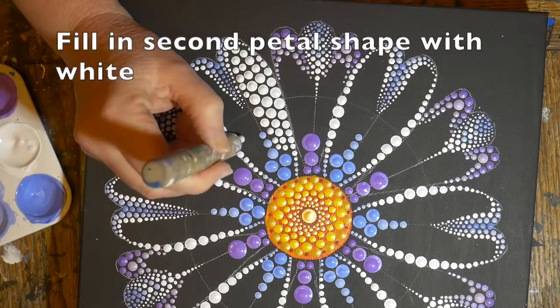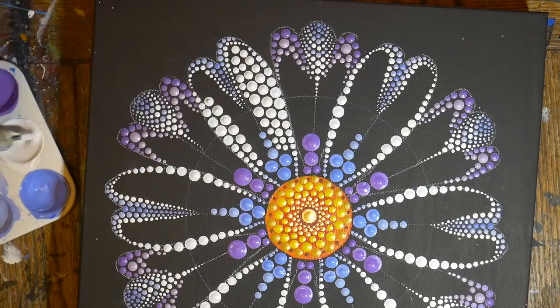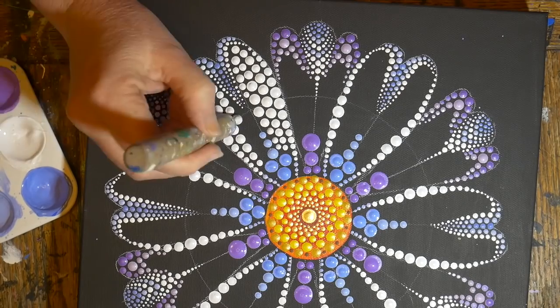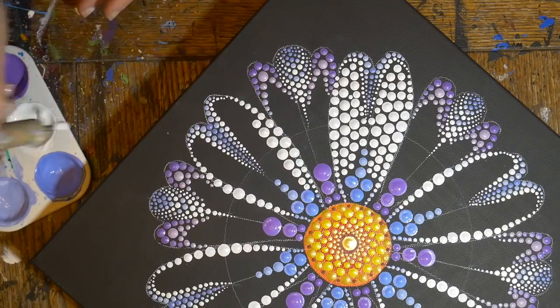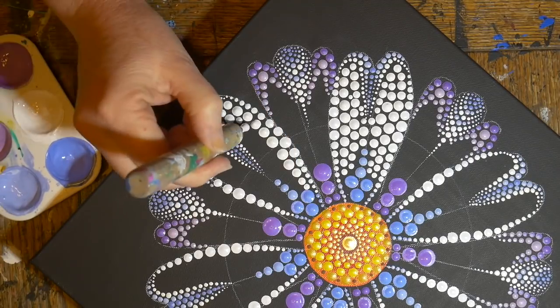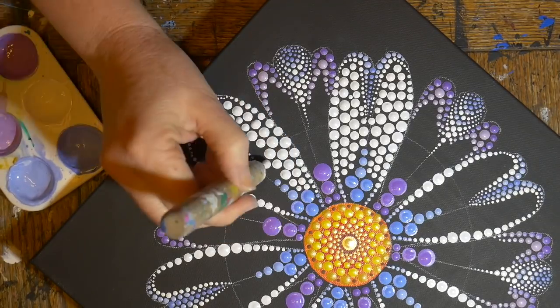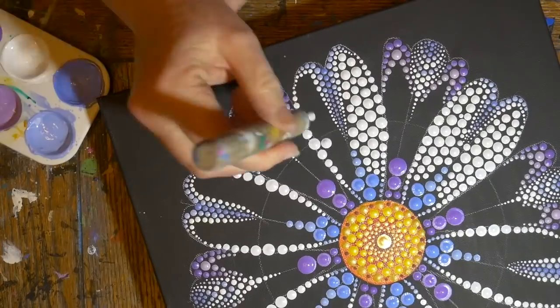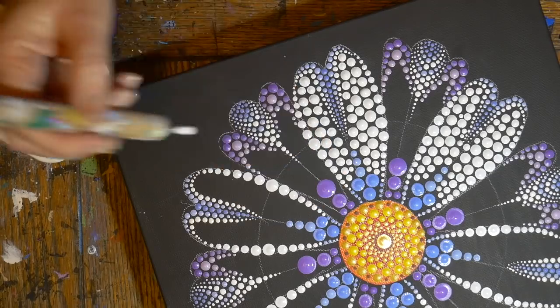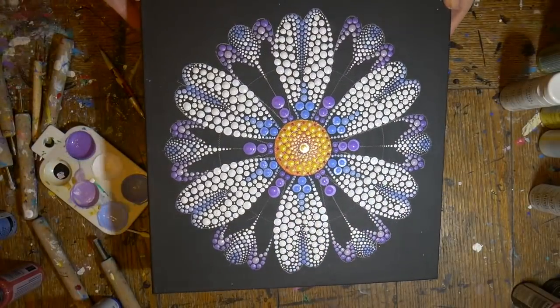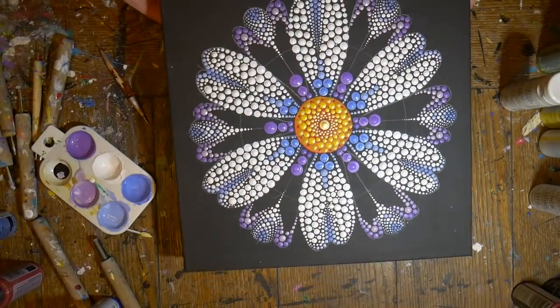I'm going to fill those in with white to get sort of that dragonfly wing looking thing going. So I filled in all of the second shape of petals with the white so they kind of look like dragonflies looking at the center of the flower.